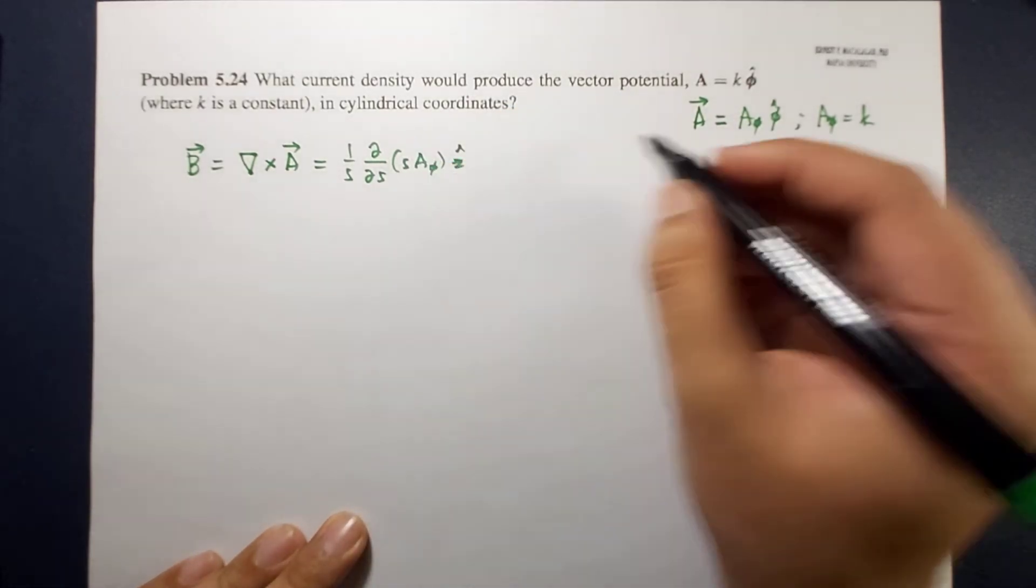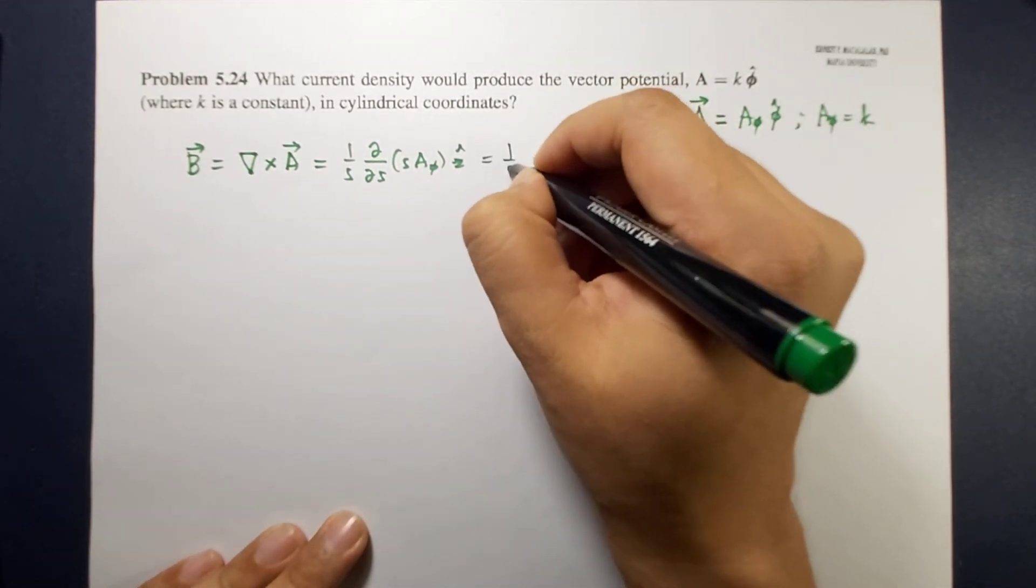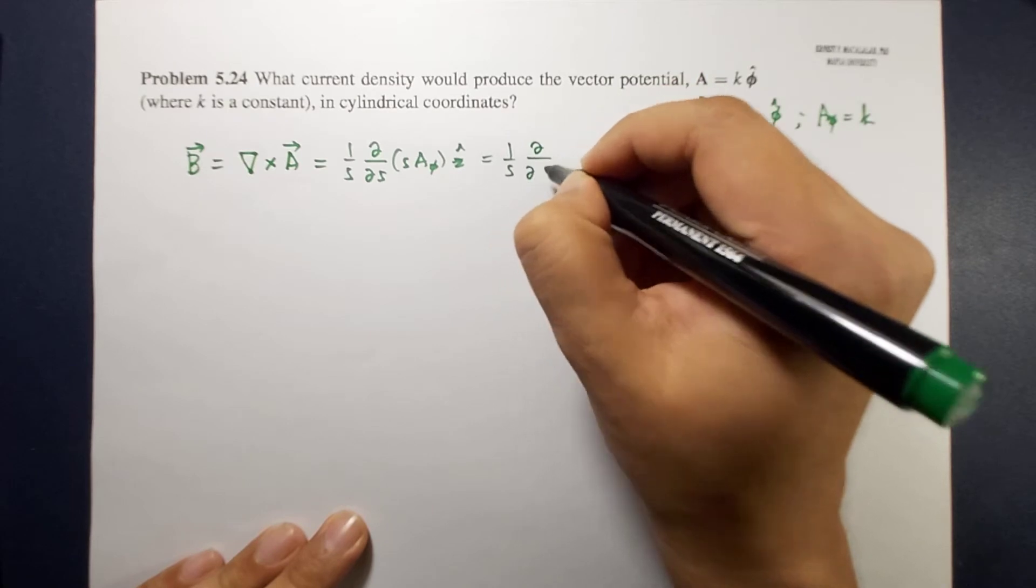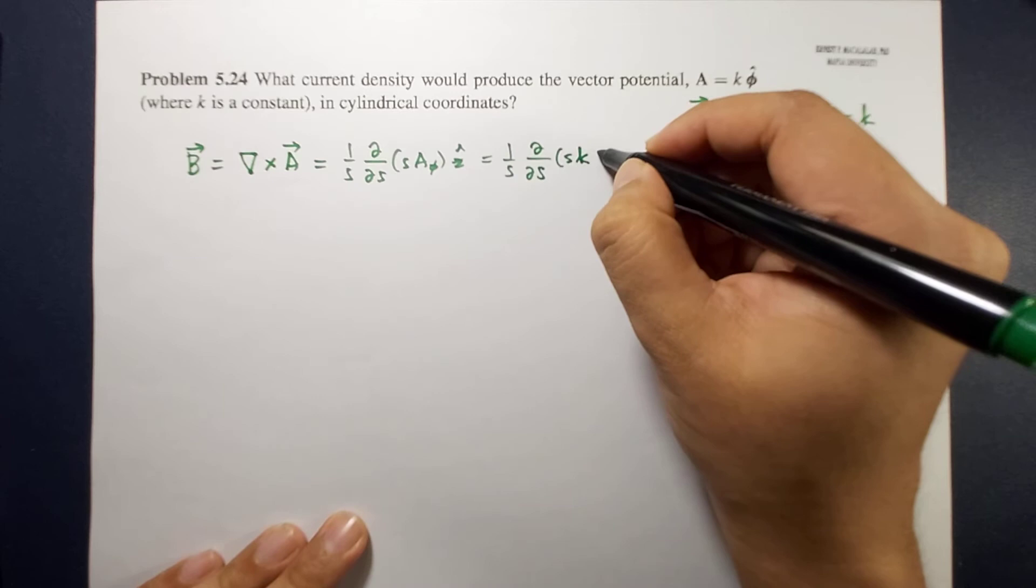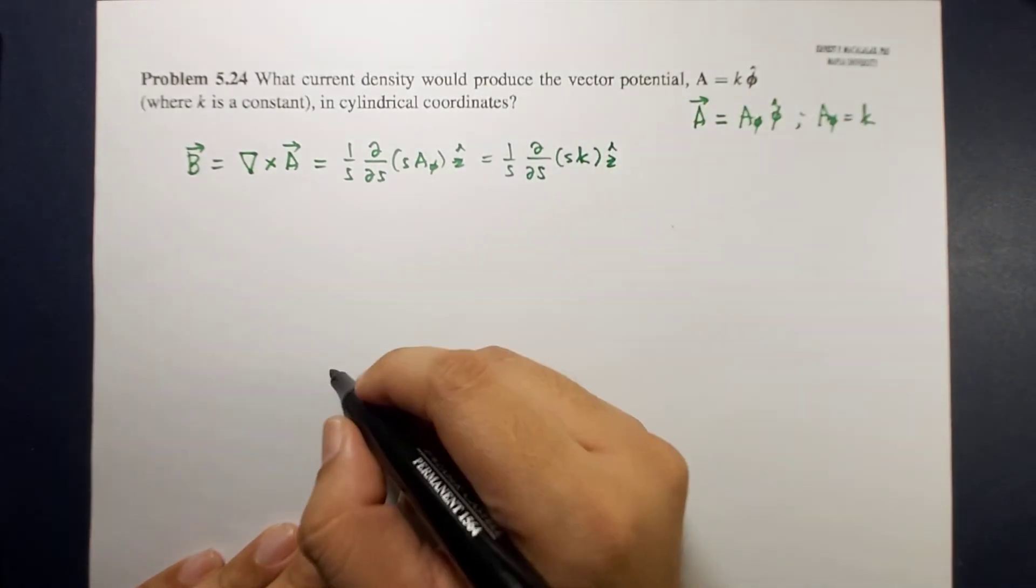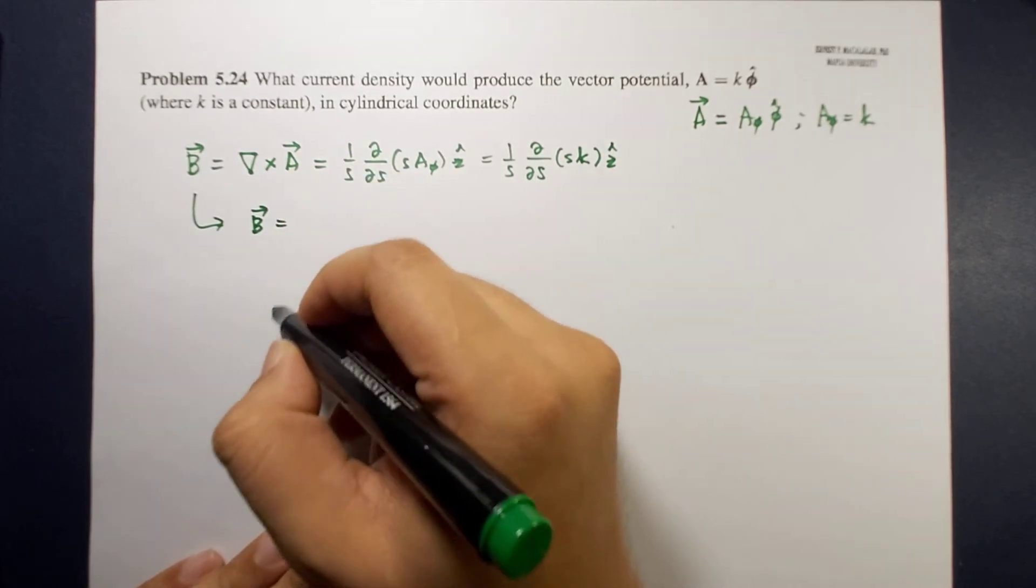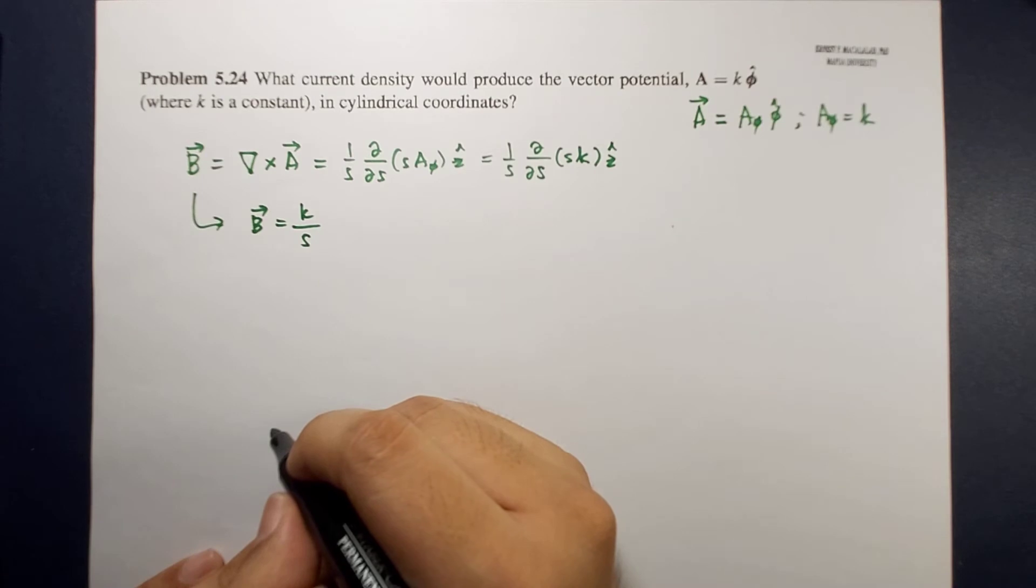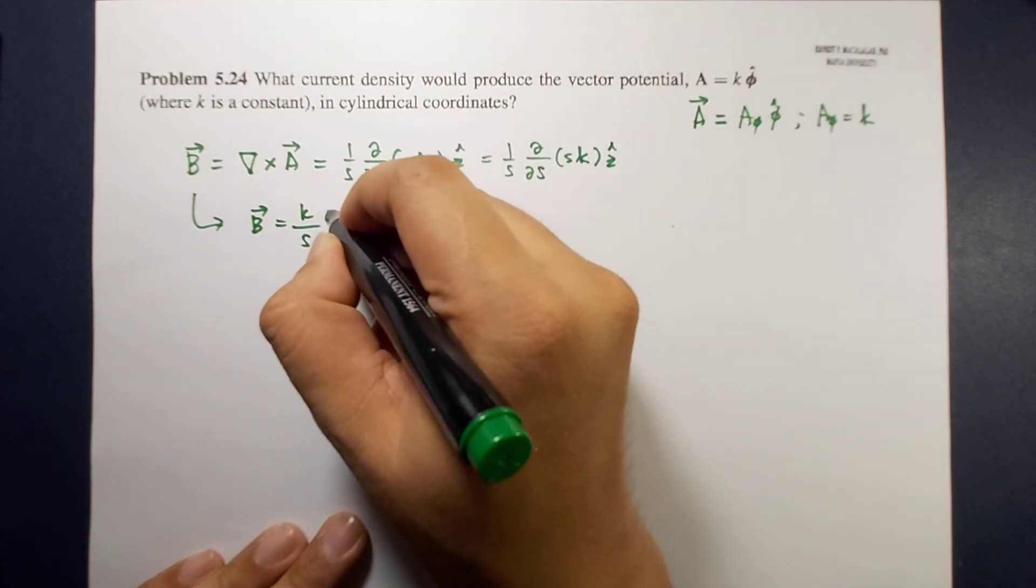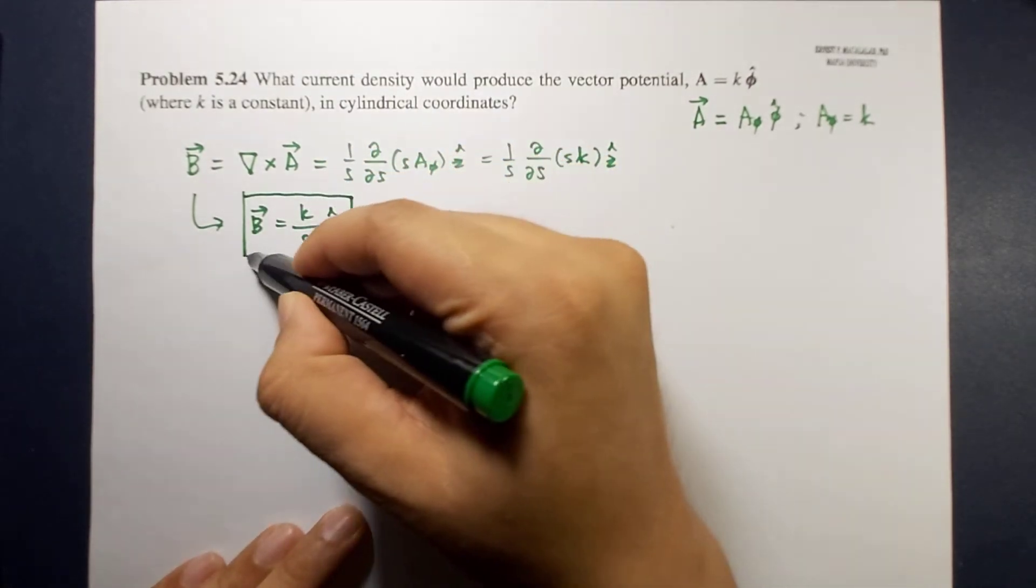Because A phi is k, this is equal to 1 over s times the partial derivative with respect to s of s k, z hat. Therefore, the magnetic field is simply k over s z hat. Very easy.